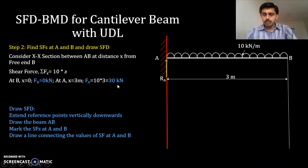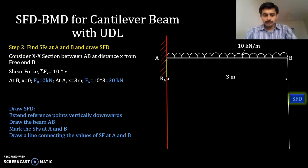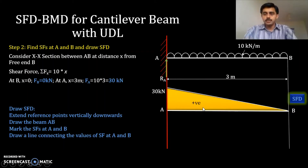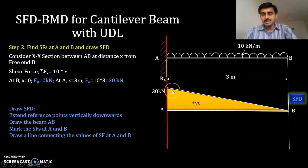To draw the shear force diagram: extend reference points A and B vertically downwards, draw the beam AB, then mark shear force values at A and B. At A, shear force is 30 kN; at B, it is 0. Draw a line connecting those points. The shear force varies linearly along the length of the beam, and it is positive throughout this section.